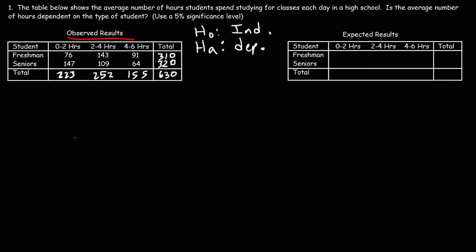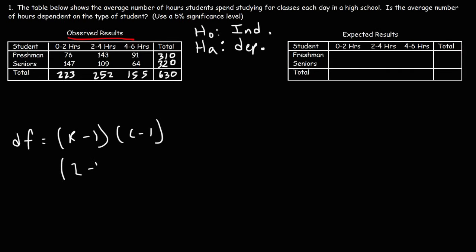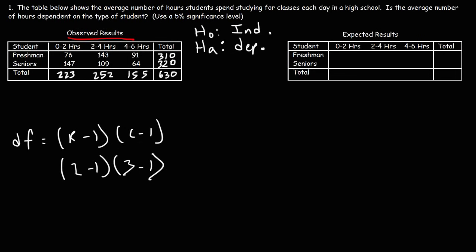To calculate the degrees of freedom, it's going to be the number of rows minus one times the number of columns minus one. In our contingency table, we have two rows for freshmen and seniors, so that's two minus one. We have three columns — it could be 0 to 2 hours, 2 to 4 hours, or 4 to 6 hours — so C is three. Two minus one is one, three minus one is two, giving us two degrees of freedom.